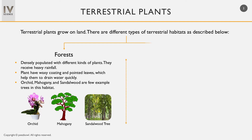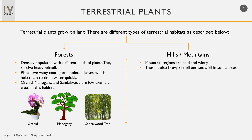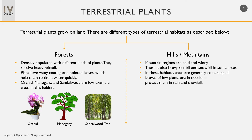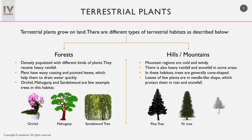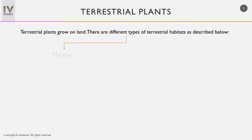Another terrestrial habitat is hills. Hills and mountain regions are cold and windy, with heavy rainfall and snowfall in some areas. In these habitats, there are generally cone-shaped trees. Also, leaves of a few plants are needle-like in shape, which protects them in rain and snowfall. Pine, fir, and cedar are a few examples of hill area trees.